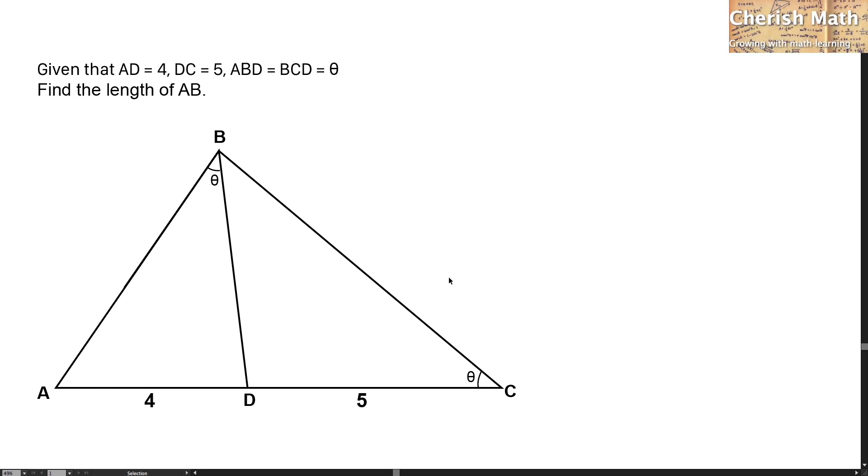Say hi from Cherish Math. Here is the question. Given that AD is 4 units, DC is 5 units, ABD and BCD is equal to angle theta. Find the length of AB.